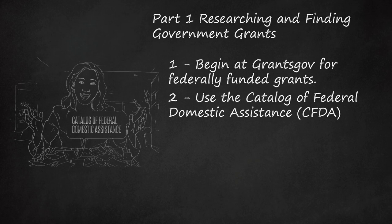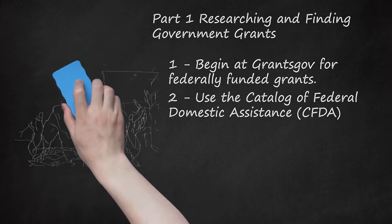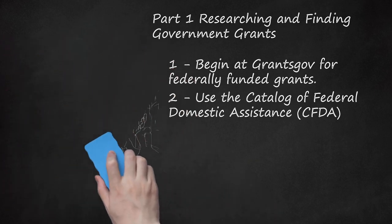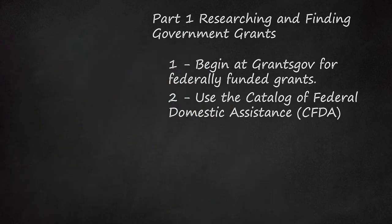For further help in searching the CFDA site, you can call the Federal Service Desk at 866-606-8220. At that number, you can access a recorded list of self-help topics, where you can speak with a live operator who can help you refine your search.